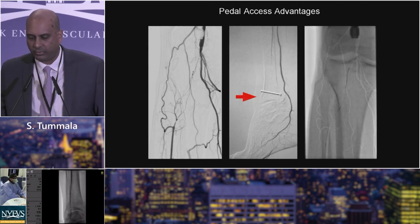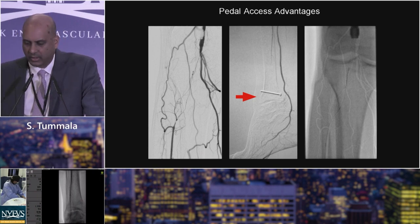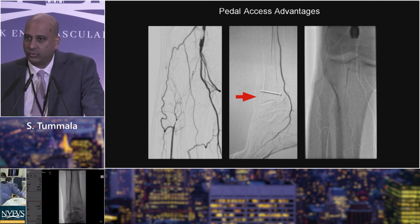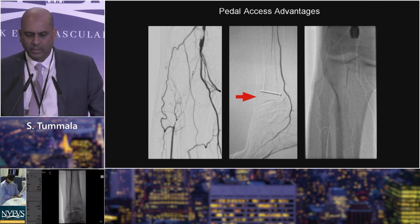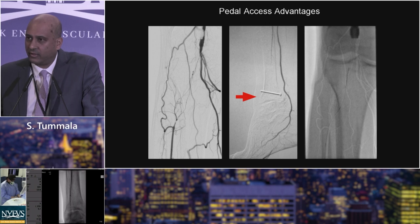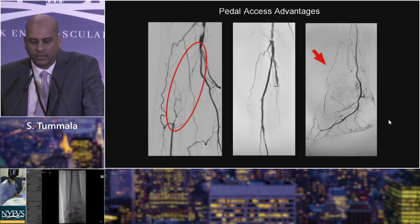Here's an example of shortening procedure times. This is a CLI patient who has multiple small ulcerations involving the toes. We've got a popliteal artery occlusion, and you can see that the proximal cap is relatively ambiguous with multiple large collaterals coming off of it. You may or may not be able to cross this in an antegrade fashion. In this case, I was unsuccessful from above, so I opted to access the occluded anterior tibial artery because we have a single-vessel posterior tibial artery runoff that I wanted to protect. I accessed that.